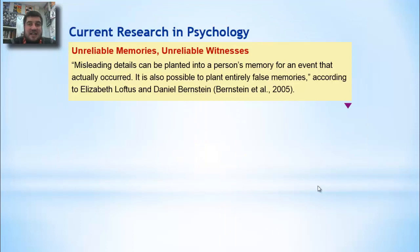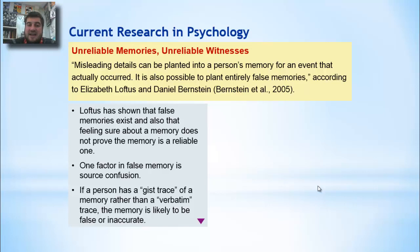In current psychology research, a very famous psychologist named Elizabeth Loftus has been doing research for the past 30 years on eyewitness memory. Misleading details can be planted into a person's memory for an event that actually occurred, and it's also possible to plant entirely false memories, according to Loftus and Bernstein. Loftus has shown that false memories exist, and that feeling sure about a memory does not prove it's reliable. This is known as source confusion — mixing memories from different sources to create one entirely new memory.